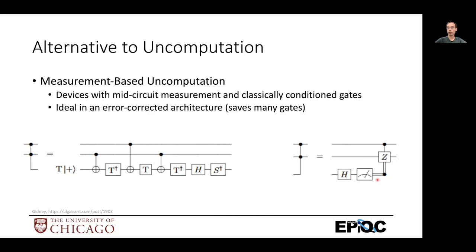But instead of that, you can just do the circuit on the right, which is simply just a Hadamard and a measurement. And if the measurement is a one, then that means there was a phase error that this measurement caused, which you can fix up with a control Z gate.